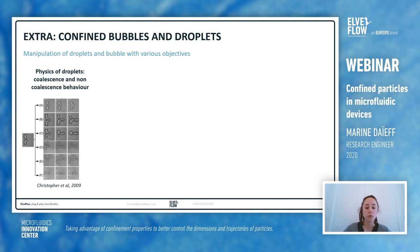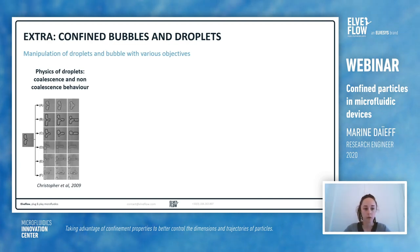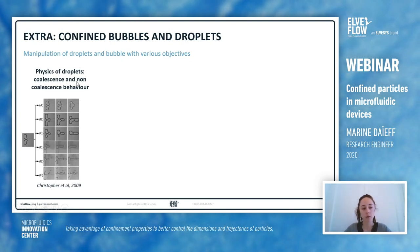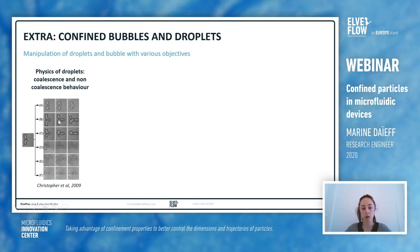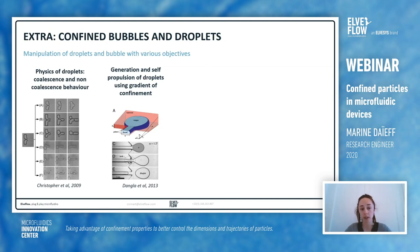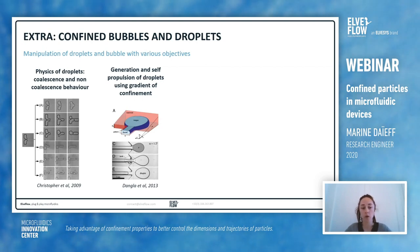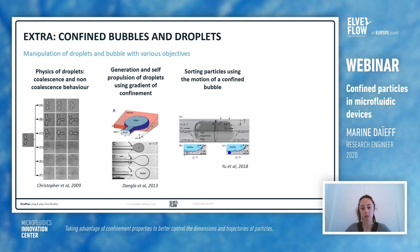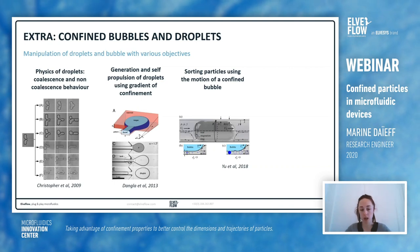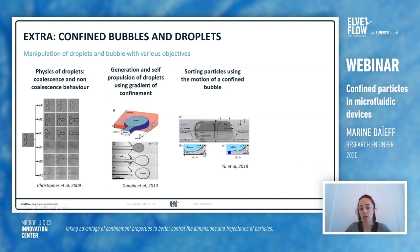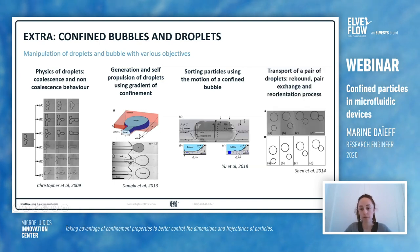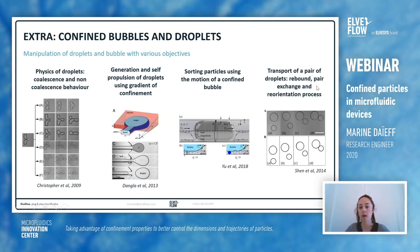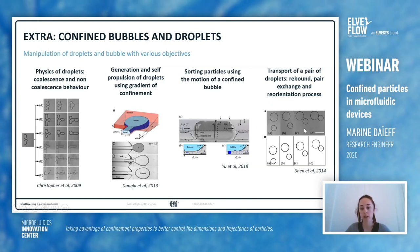To show some other applications involving bubbles and droplets in confined geometries: we can look at the physics of droplets by studying the coalescence and non-coalescence behavior of confined droplets with splitting or coalescence behaviors. Another possibility is to generate self-propelled droplets using a gradient of confinement. It's also possible to use a confined bubble to sort particles, because the smallest particles will follow the confined bubble while the biggest particles are trapped along the bubble. And it's also possible to look at the transport of a pair of droplets — the ribbon, the pair exchanges, and the reorientation processes, which are similar to the reorientation processes described earlier.